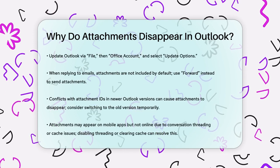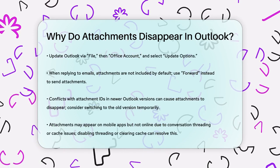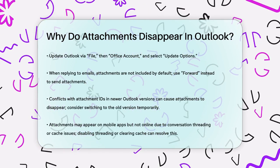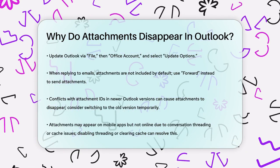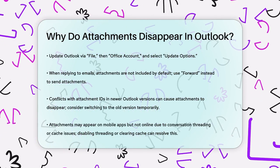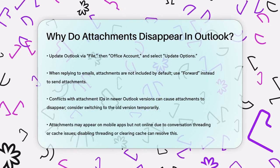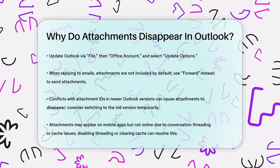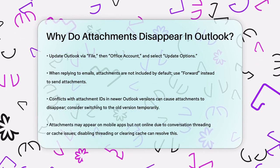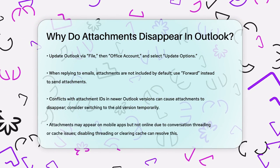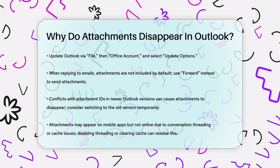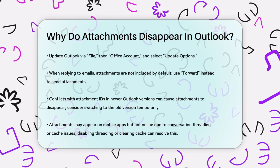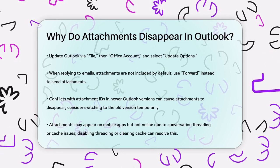In some cases, especially with the new version of Outlook, there might be conflicts with how the service detects attachment IDs, leading to attachments disappearing after sending. This can be inconsistent, affecting some emails but not others. A temporary fix might be to switch back to the old version of Outlook for sending files.